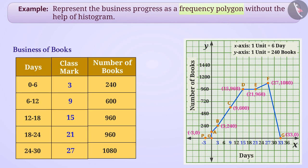In this way, we get frequency polygon O, A, B, C, D, E, F, G.